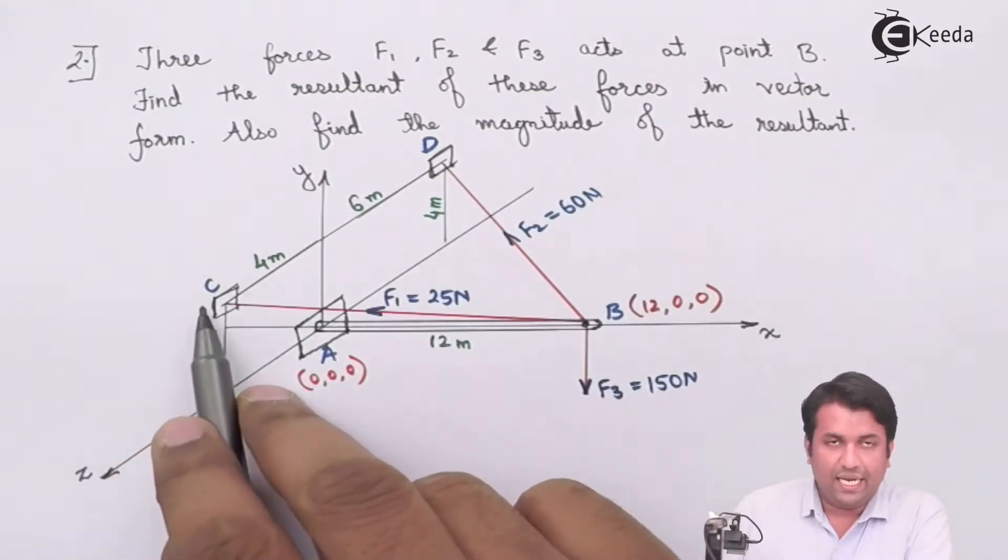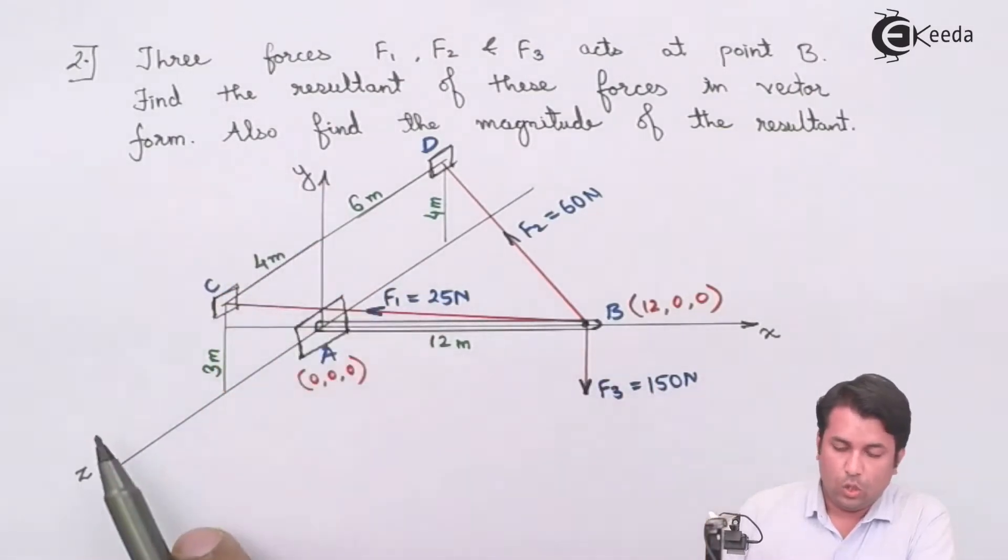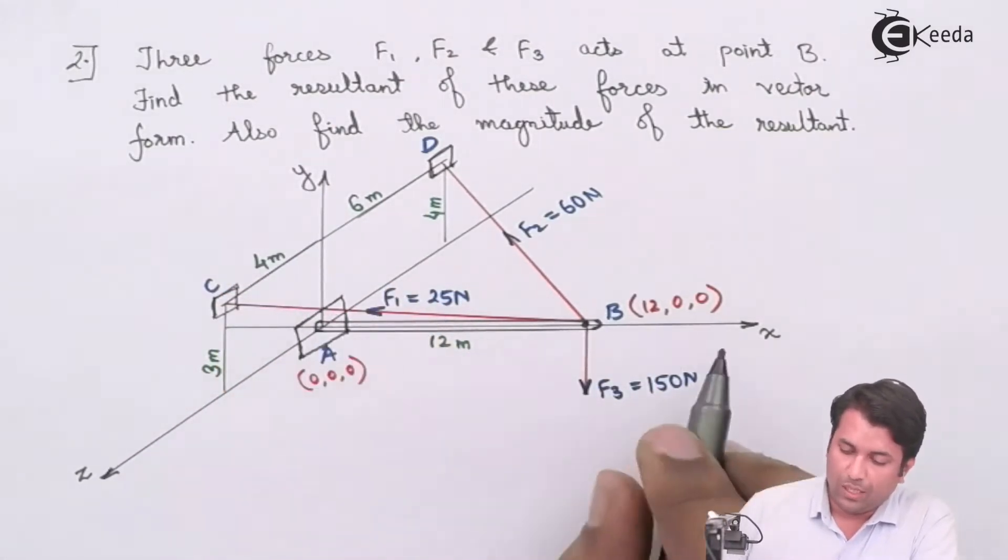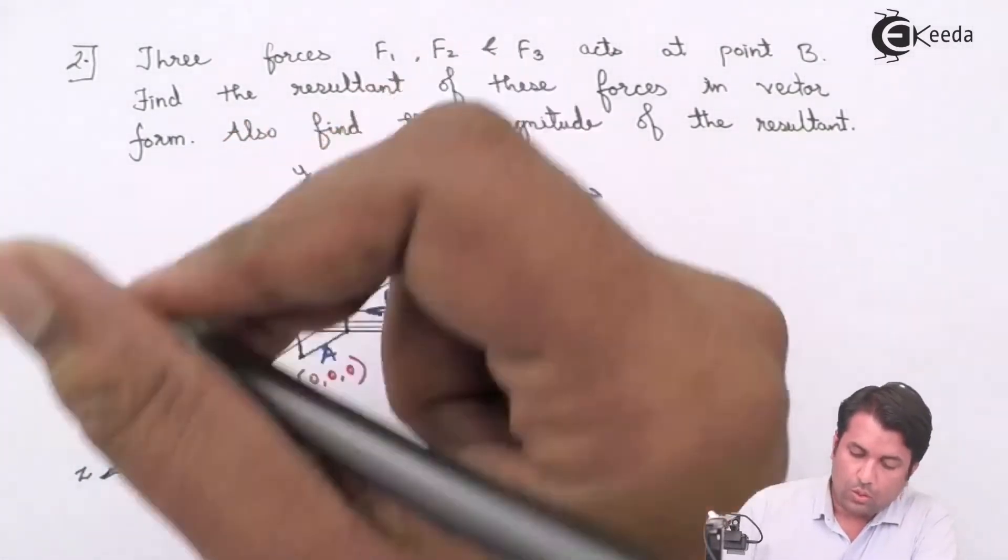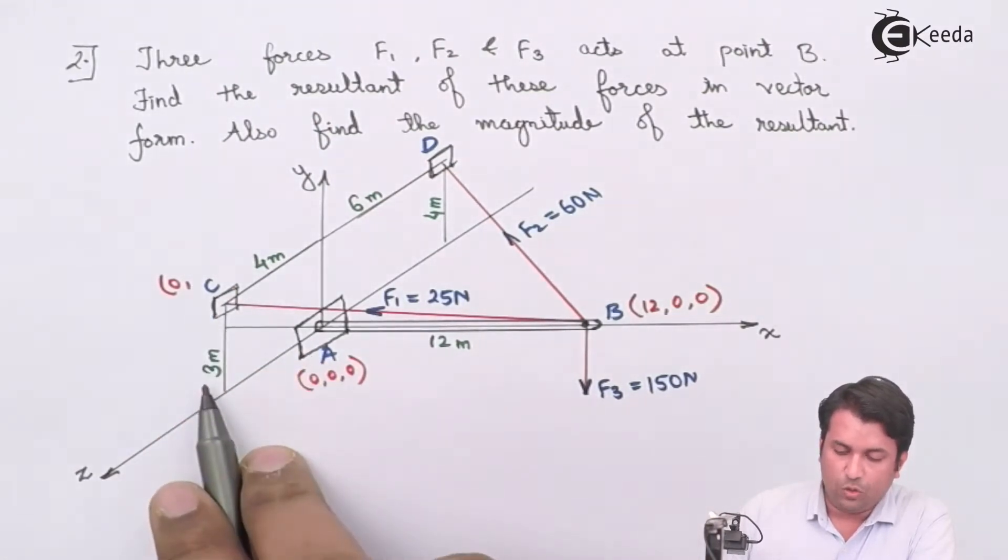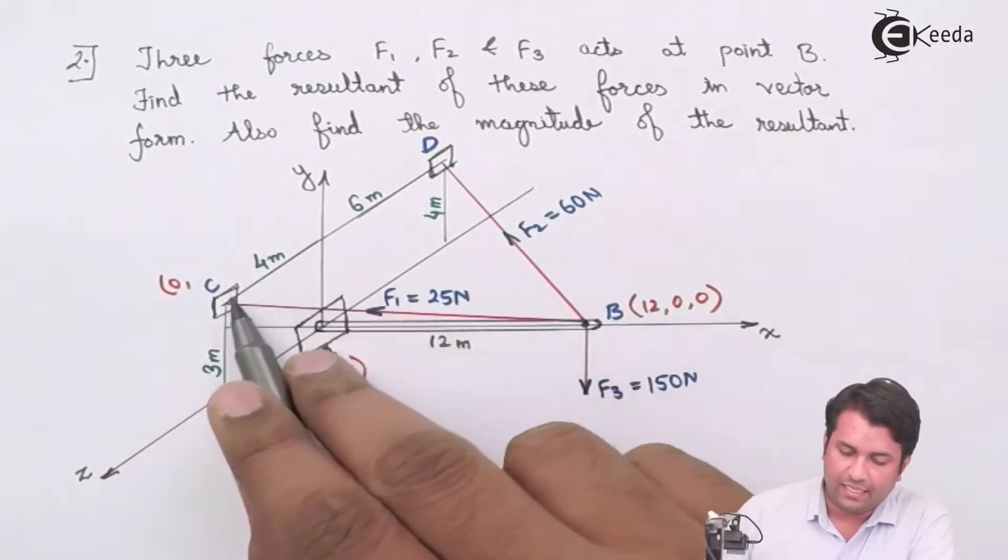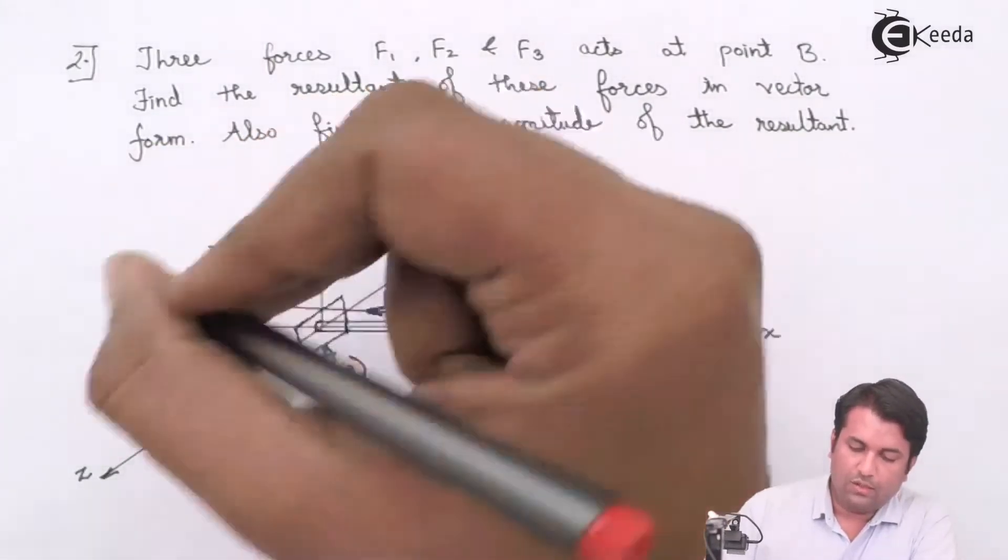For point C, point C is lying in the YZ plane, so the X coordinate will be 0. The Y coordinate is given as 3 meters and the Z distance is 4 meters, so C is (0,3,4).